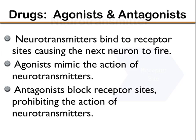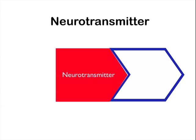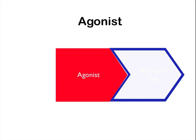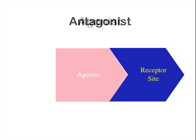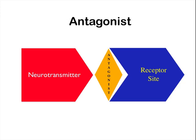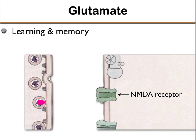A neurotransmitter has its effect by locking into a receptor site, causing it to fire — assuming it's an excitatory neurotransmitter. An agonist is a drug that mimics the action of a neurotransmitter, does exactly the same thing. An antagonist is a drug that blocks the action of a neurotransmitter. So when the neurotransmitter tries to lock into the receptor site, it can't do that — it has no effect. One of the many neurotransmitters in the brain is glutamate, which is involved hugely in learning and memory, especially in the hippocampus.